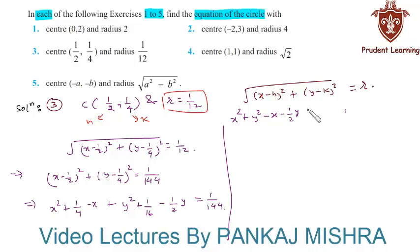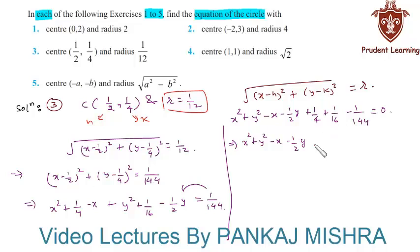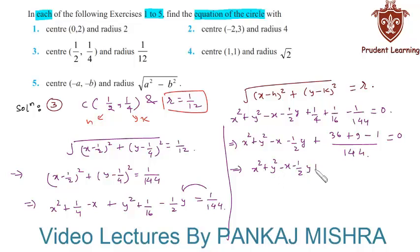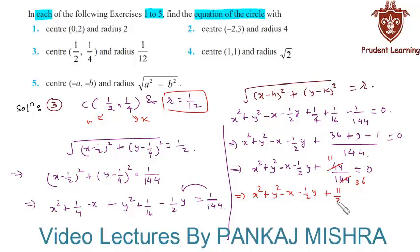Taking 144 as LCM in the last three terms, we get 36 plus 9 minus 1 equal to 44 over 144. Since 144 divided by 4 is 36, this simplifies to 11/36. So the equation becomes x square plus y square minus x minus y/2 plus 11/36 equal to 0.